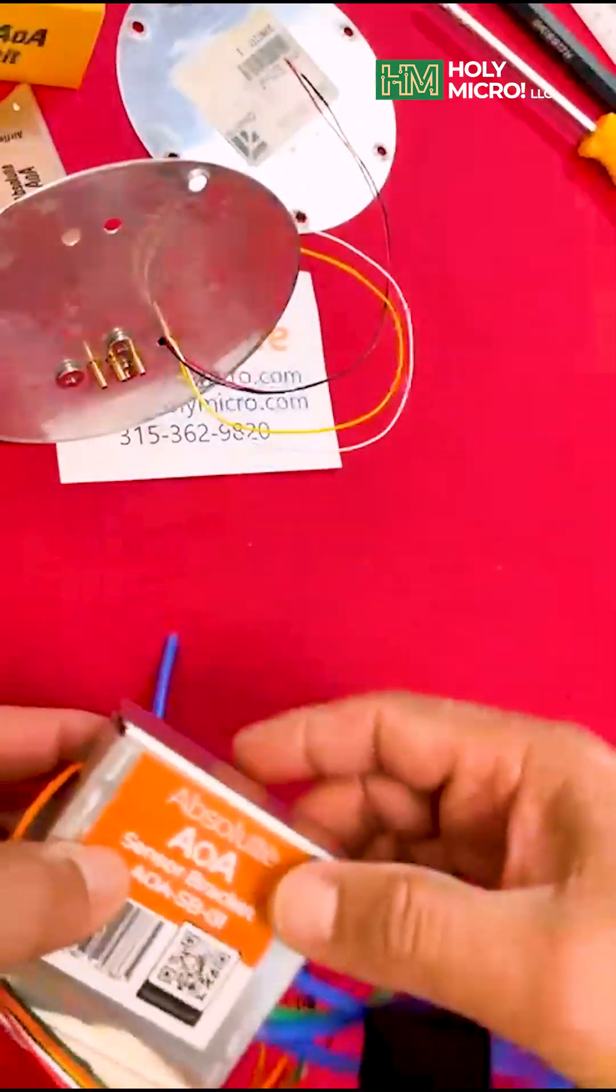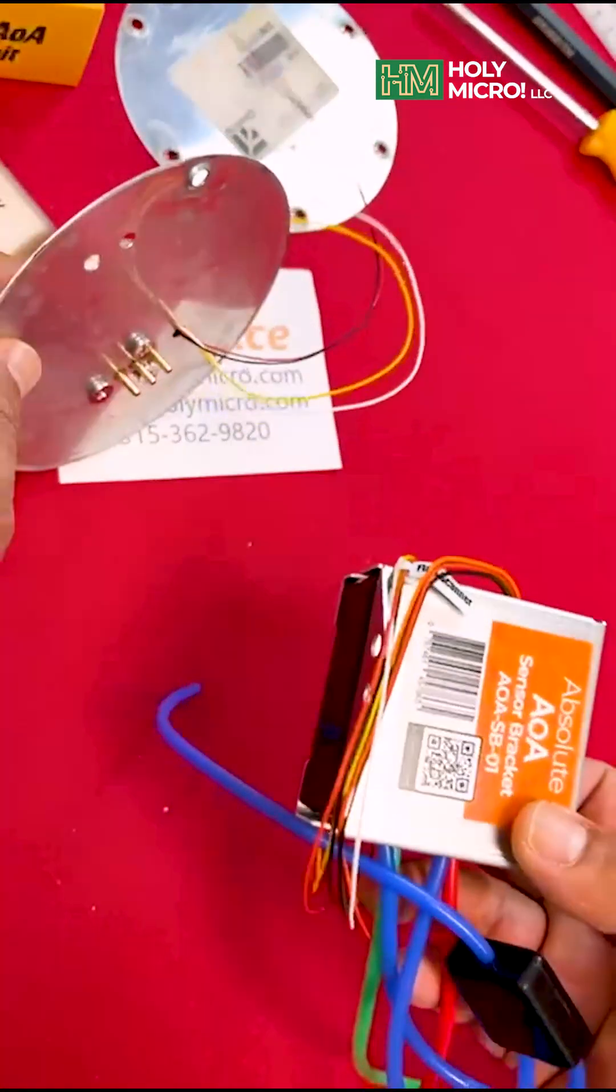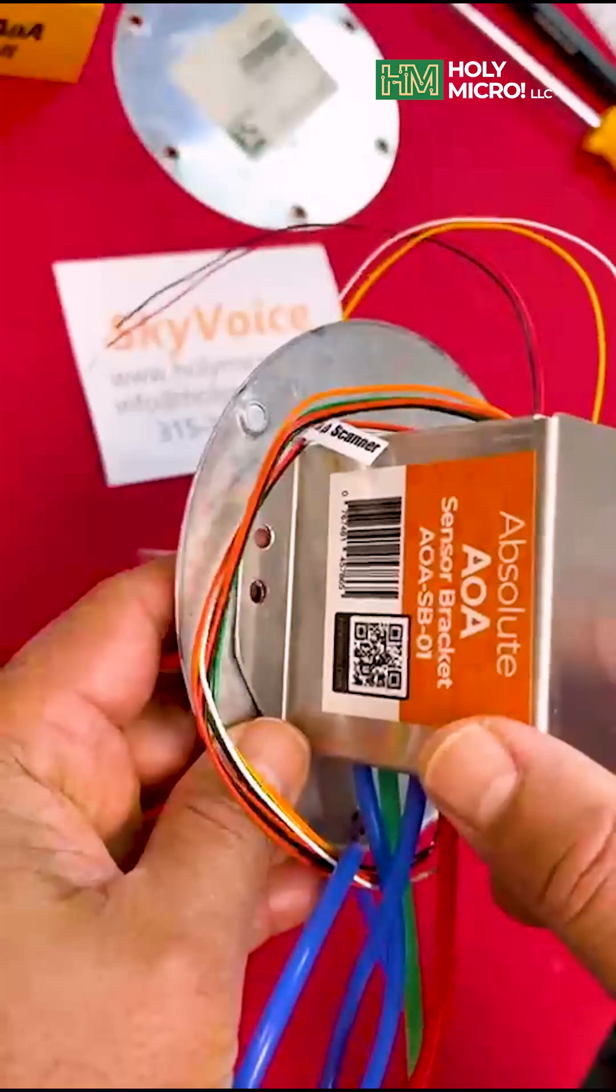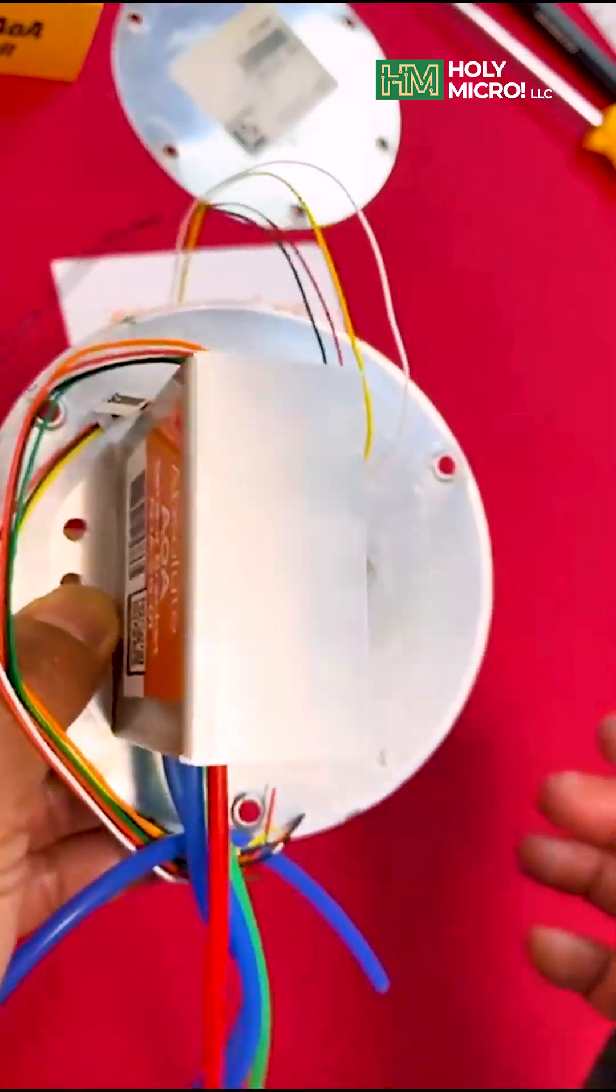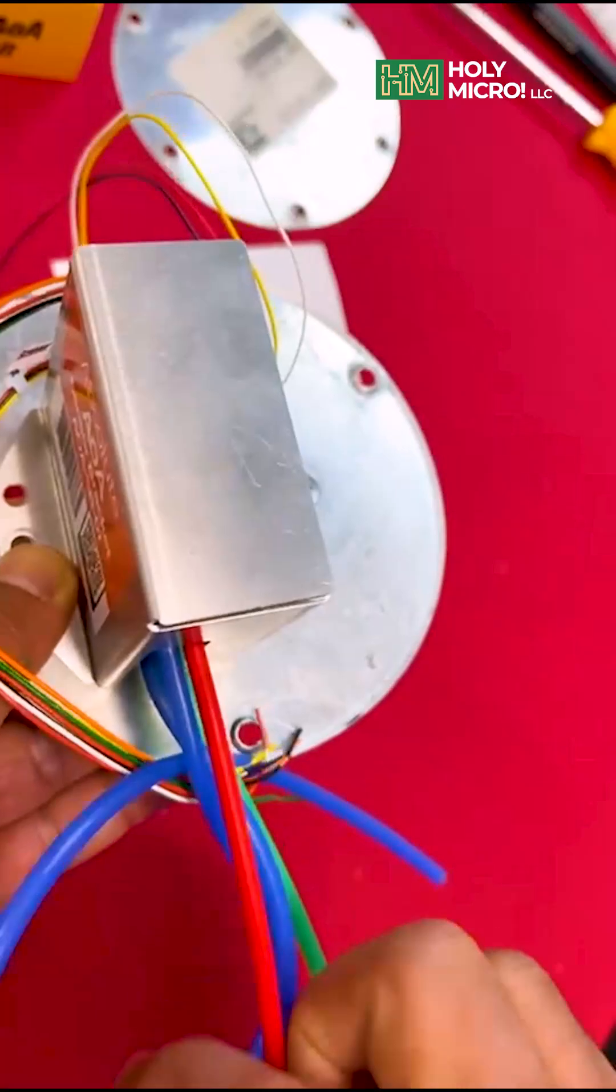This bracket can be secured to your aircraft's inspection plate using one or two small bolts and nuts. For this demonstration, we are using a standard Cessna round inspection plate.